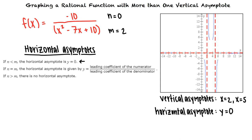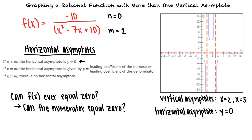The graph of f may intersect the horizontal asymptote y equals 0 if we can find an x value that makes f of x equal to 0. Since the rational function is in its simplest form, this will only happen if the numerator equals 0. Since the numerator equals negative 10, the numerator will never be 0, so f of x never equals 0. This tells us the graph of f never intersects the horizontal asymptote y equals 0, which also means there is no x-intercept.